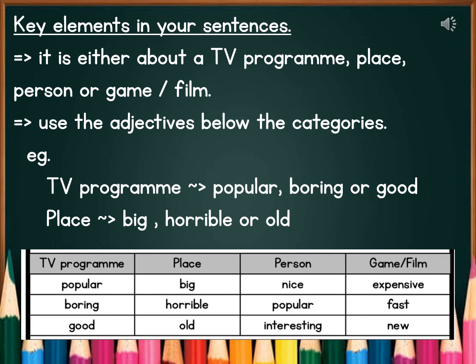Your sentence is either about a TV program, place, person, or a game or film — one of these four categories. Use the adjective below the categories. Each of the categories comes with three adjectives — setiap satu category tu ada tiga adjectives. For example, if you look at TV program, it has: popular, boring, or good. So when you talk about the TV program, you use one of these three adjectives.